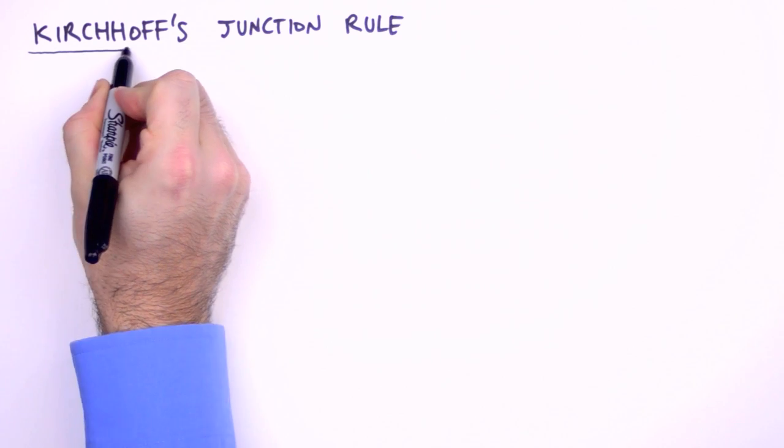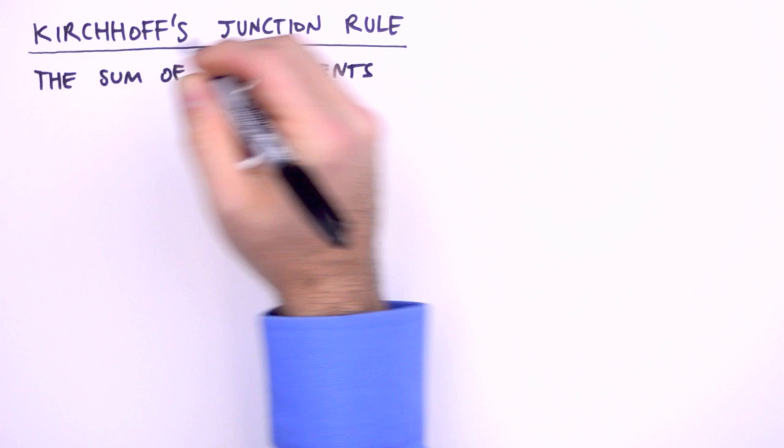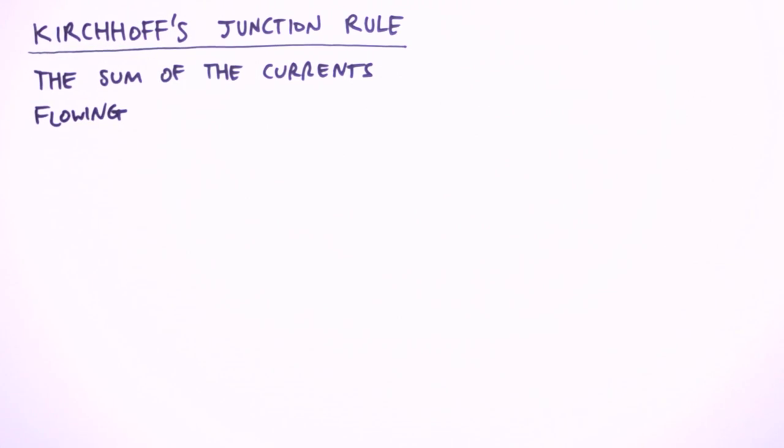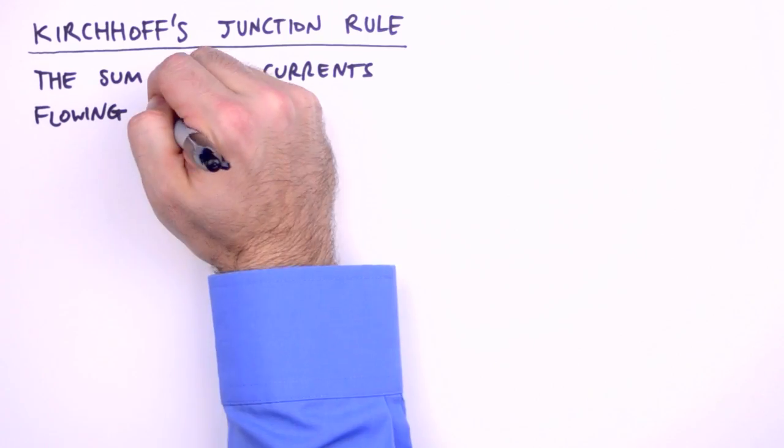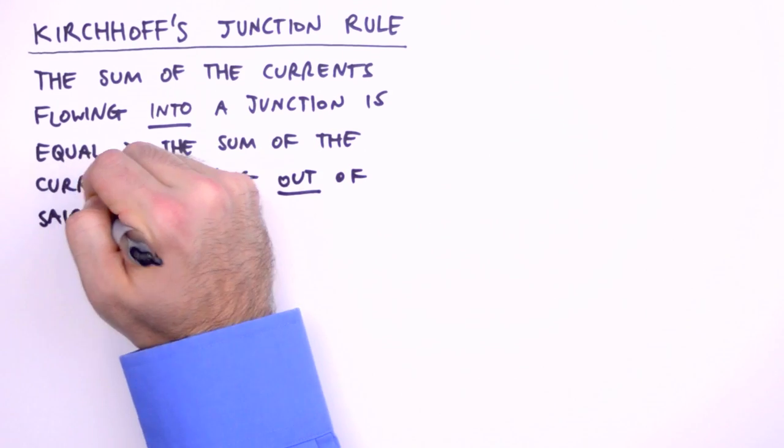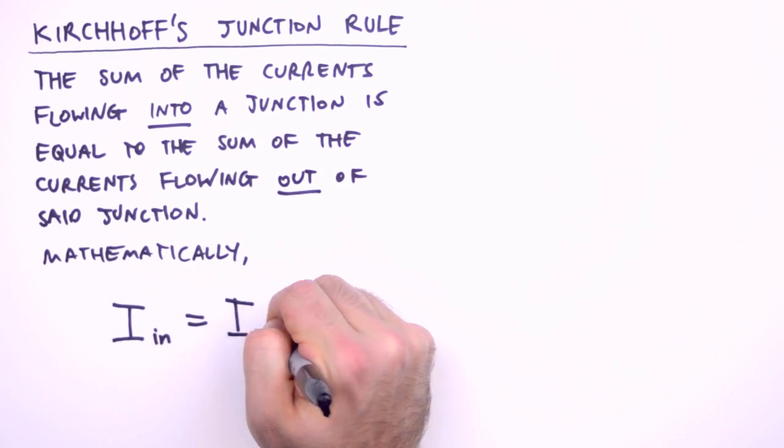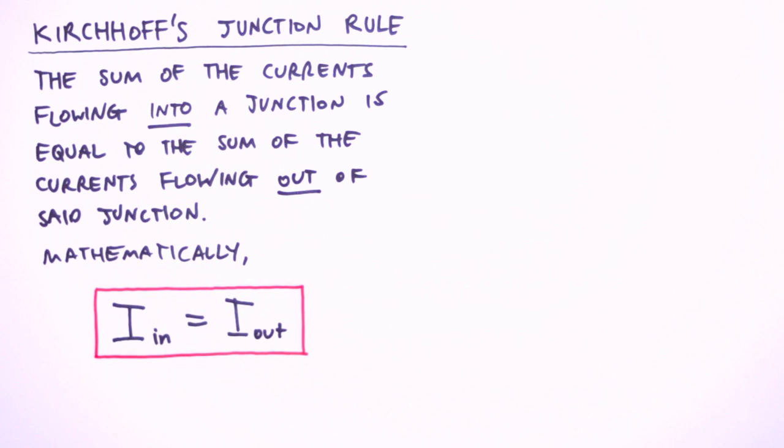The first rule that we'll examine is Kirchhoff's junction rule. The junction rule states that the sum of the currents flowing—and yes, I know that current flow is a bit redundantly redundant—anyway, the sum of the currents flowing into a junction is equal to the sum of the currents flowing out of said junction. Mathematically speaking, current in equals current out. Sounds simple enough, right?